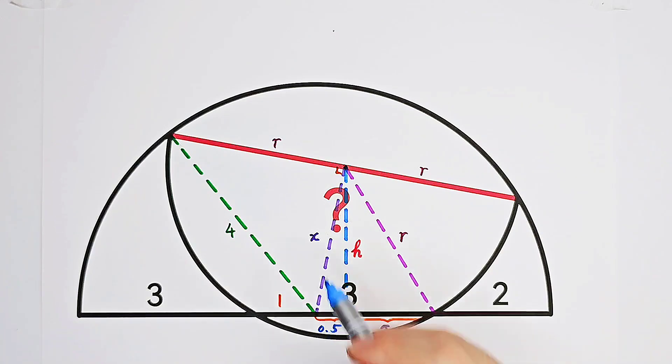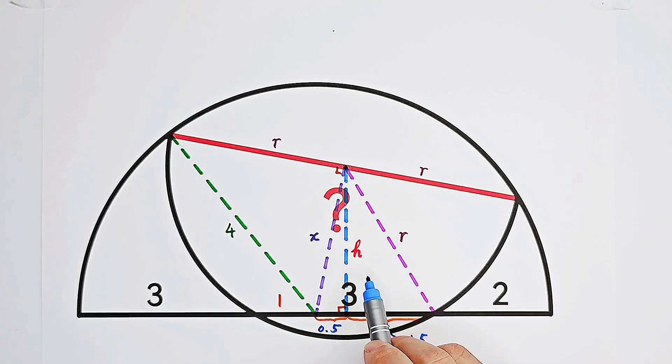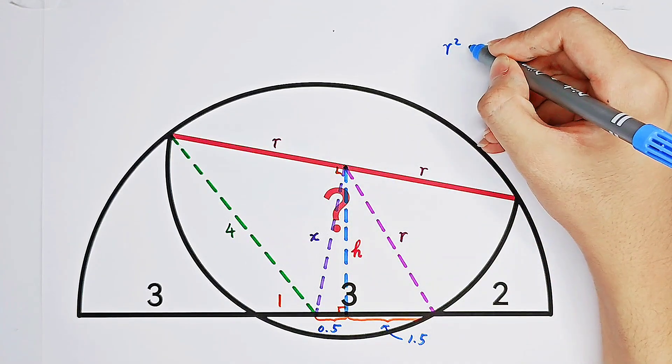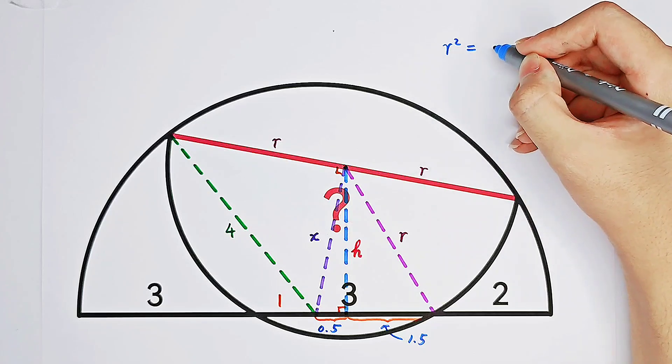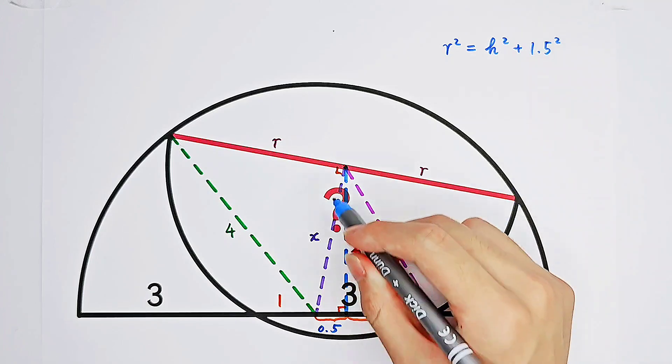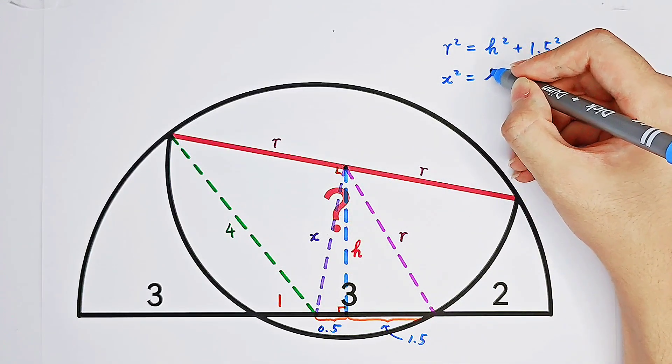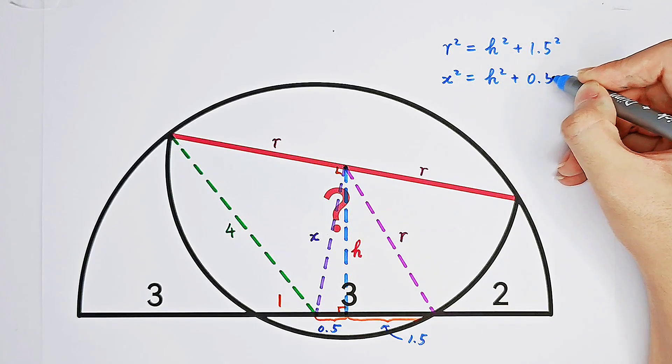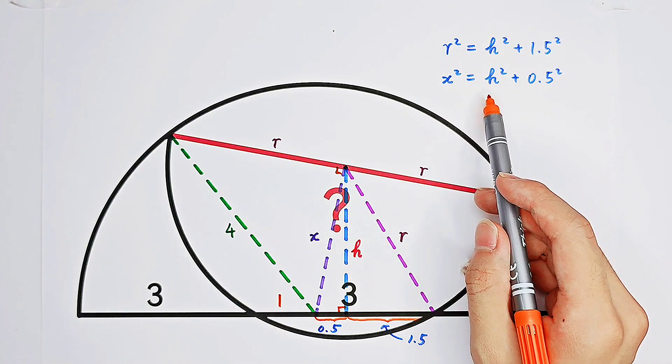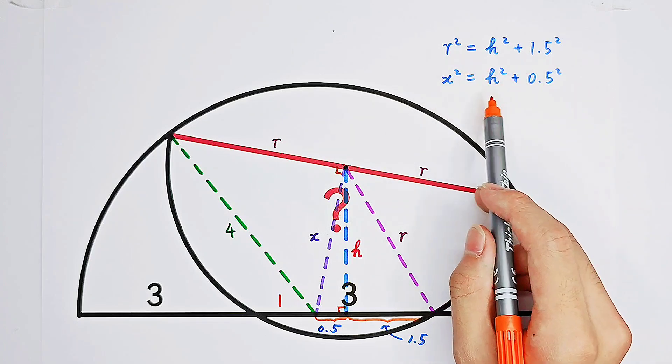Firstly, let's have a look at the equations in these two right triangles. Here we have R squared equals H squared plus 1.5 squared. And here we have X squared equals H squared plus 0.5 squared. Now you see H squared appear in both equations.